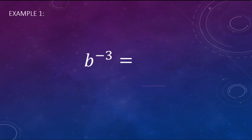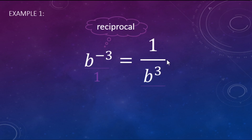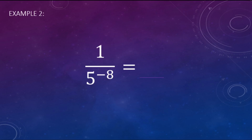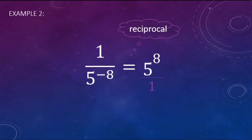Following that same pattern, b to the negative third power equals 1 over b to the positive third power. Negative exponents have a reciprocal idea: b to the negative third over 1 becomes 1 over b to the positive third — the base moves from numerator to denominator and the exponent goes from negative to positive. Similarly, 1 over 5 to the negative eighth power equals 5 to the positive eighth — the base moves from denominator to numerator, negative eight becomes positive eight.